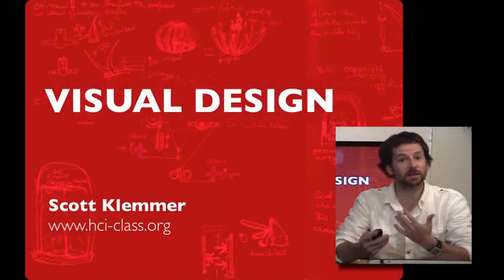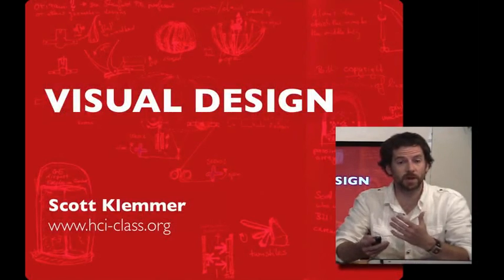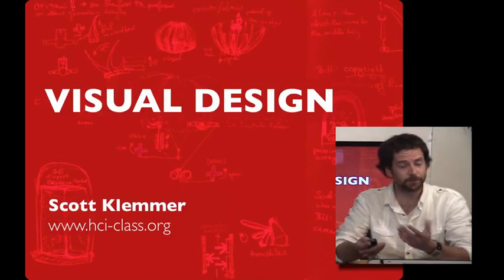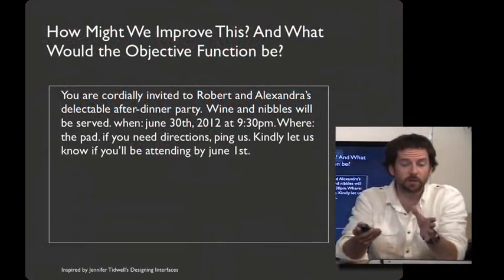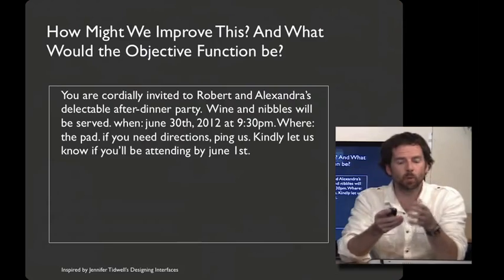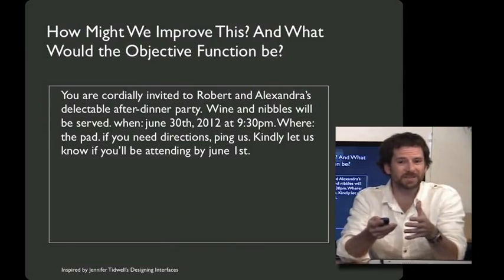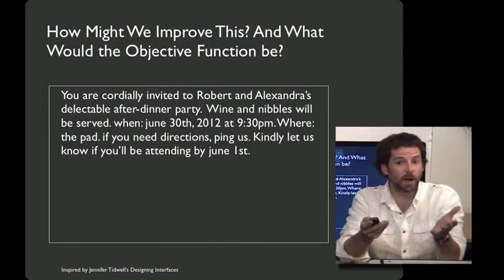Over the next several lectures, I'd like to introduce you to graphic design and a set of strategies for helping you communicate more effectively visually. To start out with, let's look at this example here of some undifferentiated text. What might we be able to do typographically to improve this, and how would we decide whether we did well?